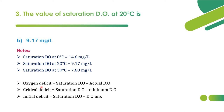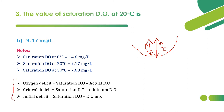Oxygen deficit = saturation DO − actual DO. This deficit is visible on the oxygen sag curve at any time t, and the maximum is the critical deficit (suffix c). These are the formulas to calculate initial, critical, and time-varying oxygen deficit. Oxygen deficit at any time t = saturation DO − prevailing dissolved oxygen in the stream.